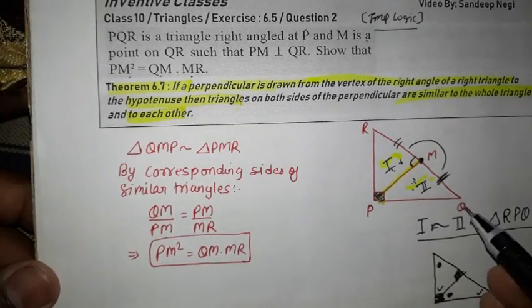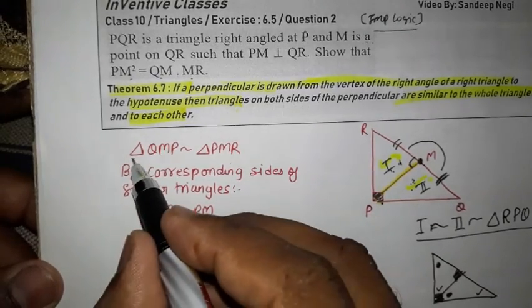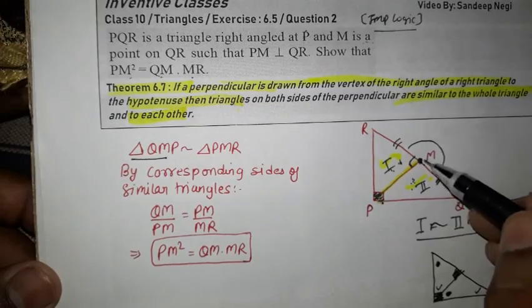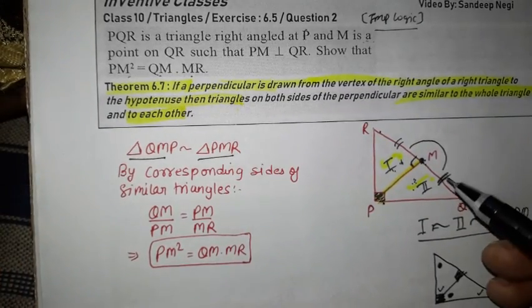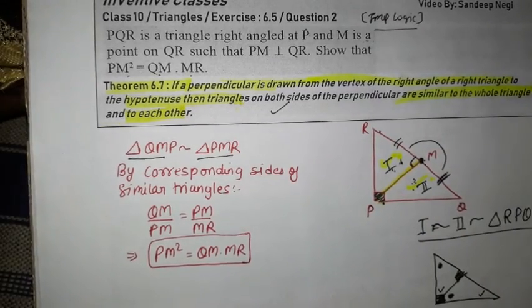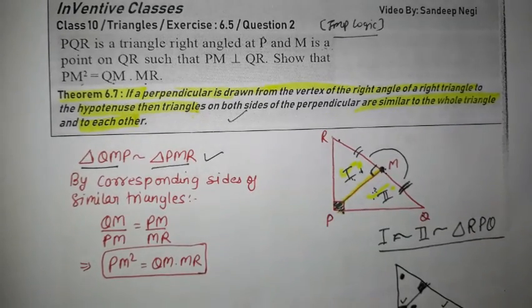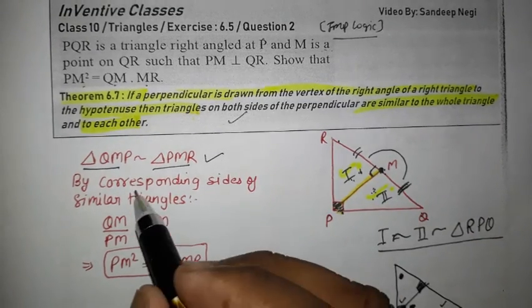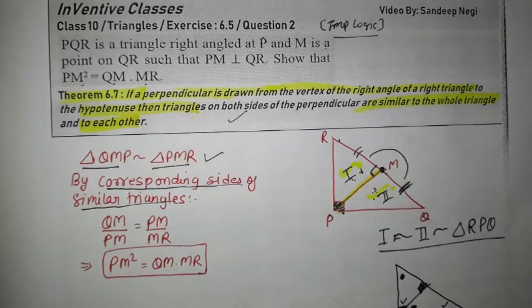First of all, triangle QMP and another triangle PMR. Now we know using this theorem, we already know that these are similar. If they are similar, then the corresponding sides will be proportional.